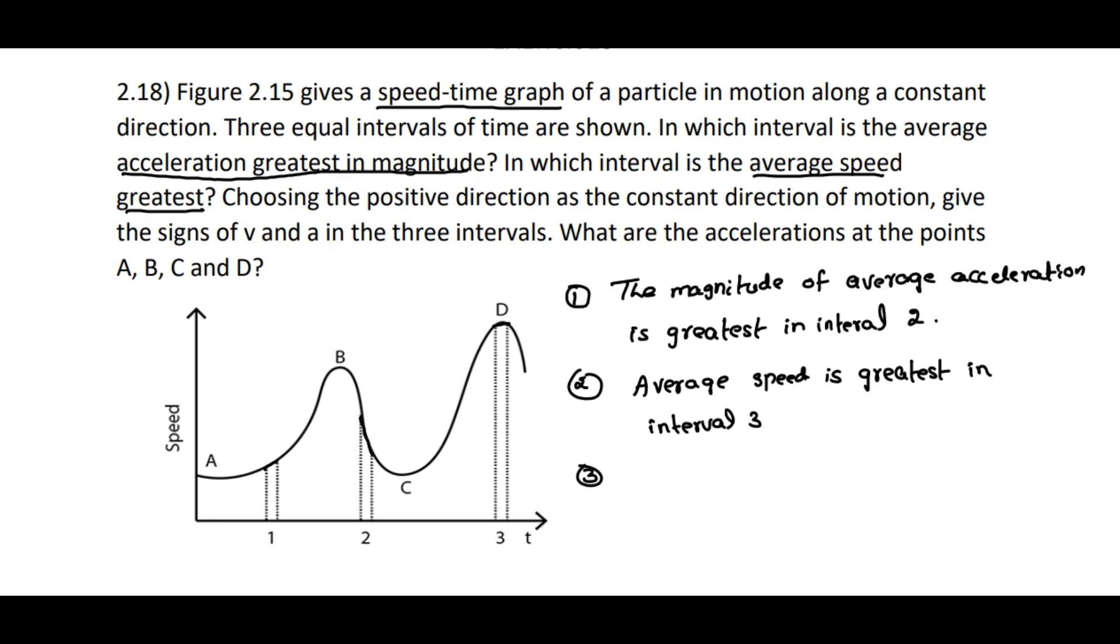While coming to the third sub-question: choose the positive direction as the constant direction of motion, give the signs of v and a in three intervals. We need to specify v and a where they are positive, where they are negative.